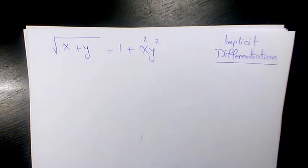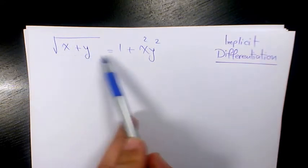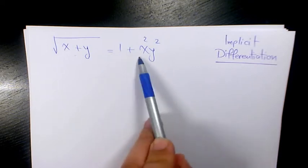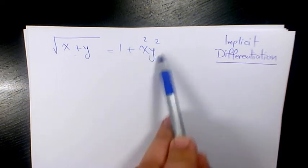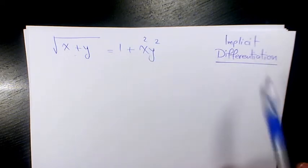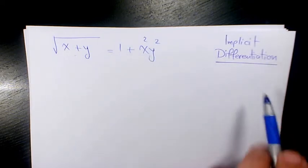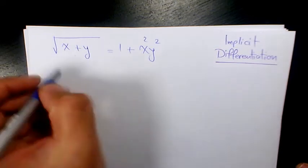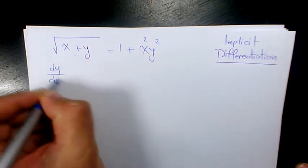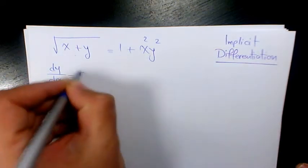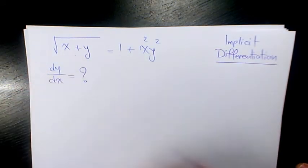What's up guys, this is Massey. Welcome to another video. In this video I want to show you how to find the derivative of square root of x plus y equals to 1 plus x squared y squared. We need to use implicit differentiation and we need to find dy over dx.